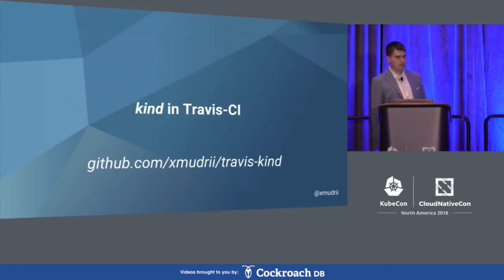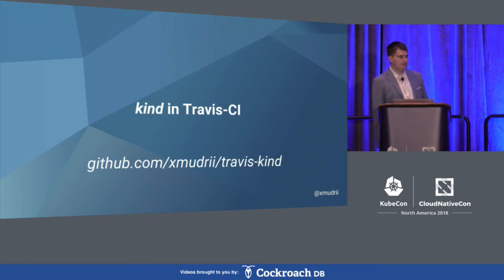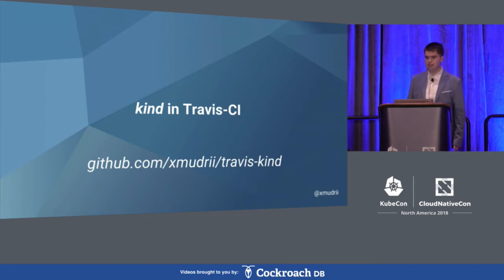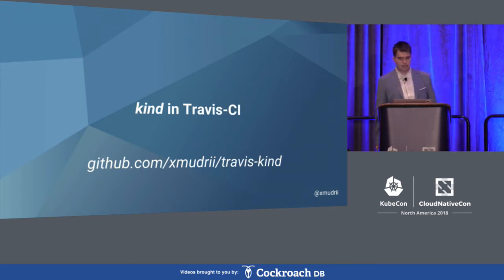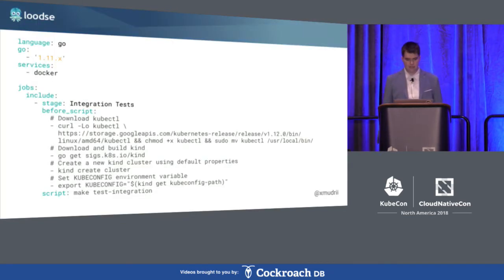We are going to see how that looks for Travis CI and how we can get a KIND cluster running there. Travis CI is one of the most popular CI systems among open source projects, but these steps should work for any other CI system as long as you have Docker available.